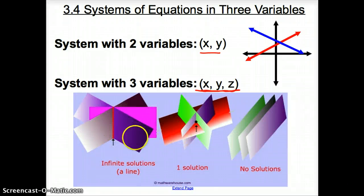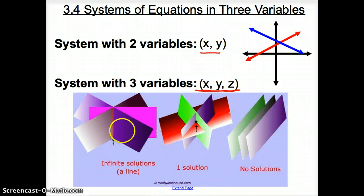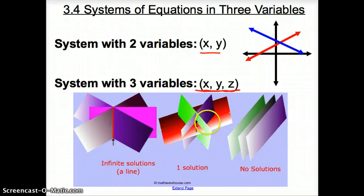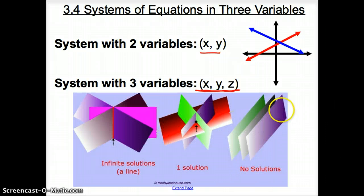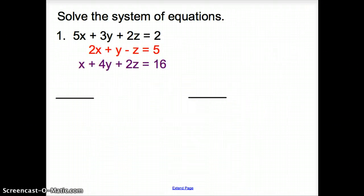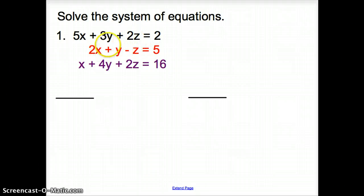A system with three variables gives us three-dimensional shapes — planes. We're no longer talking about lines; we're talking about planes. I can't take credit for this beautiful picture — I took this from the Math Warehouse, and it's their beautiful diagram. When you have infinite solutions, this is what the planes look like. When you have one solution, it looks like this. And no solutions — all the planes are parallel to each other.